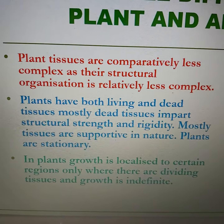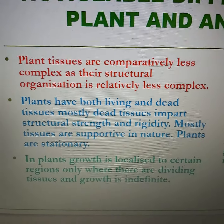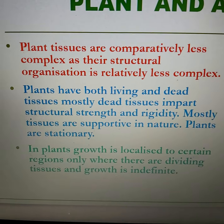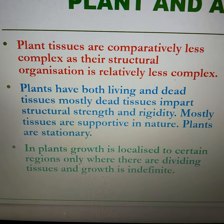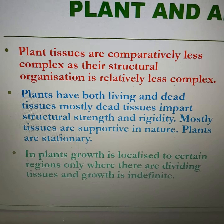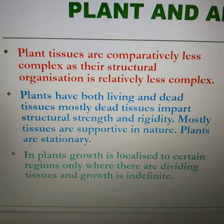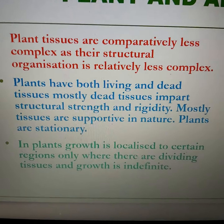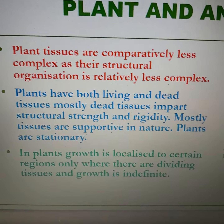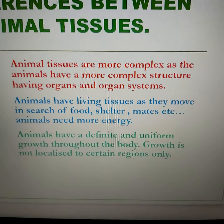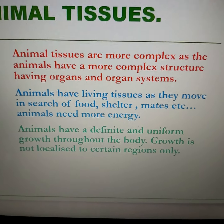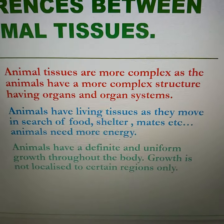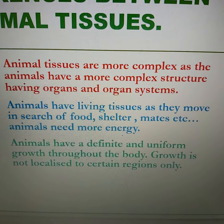The second difference is that plants have a sedentary existence — they cannot move from one place to another — so their energy requirements are very less. Apart from that, they need more support, strength, and rigidity because they have to withstand all kinds of environmental stress staying at one position. So plants have both living cells as well as dead cells in their tissues. More the amount of dead tissue, more is the strength and rigidity. Animals, on the other hand, show movement and locomotion; their energy requirements are more, so their tissues are living in nature and they do not possess dead tissue.